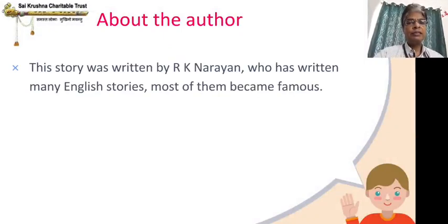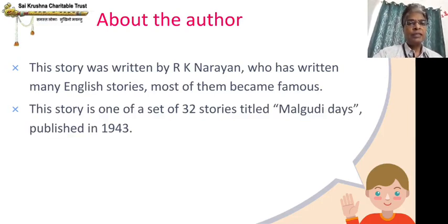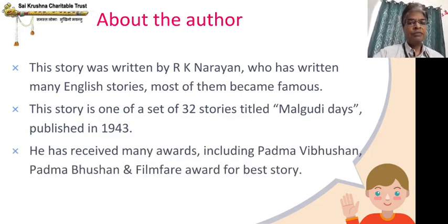About the author: the name of the author is R.K. Narayan. He has written many famous English stories. He was born more than 100 years ago and died around the year 2000. This story, The Blind Dog, is one of 32 stories in a collection titled Malgudi Days, published in 1943 — almost 80 years ago. Malgudi Days is very famous and was also made into a movie. This story is still famous for its values. R.K. Narayan received many awards including Padma Vibhushan, Padma Bhushan, and the Filmfare Award for Best Story. Padma Vibhushan is one of the highest awards given by the Government of India.